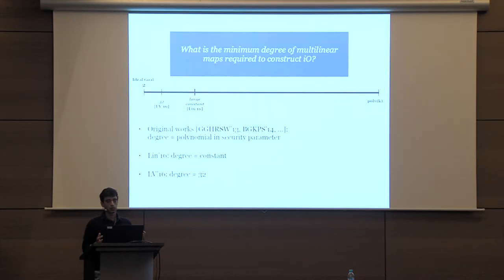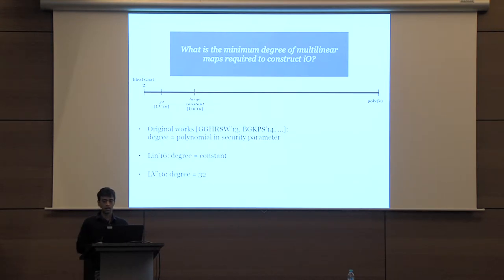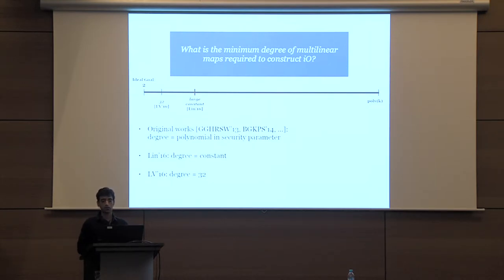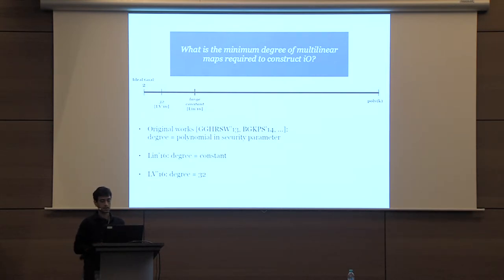The natural question to ask is: what is the minimum degree of multilinear maps required to construct IO? The ideal goal would be two, so we can just base IO on bilinear maps. However, the original constructions starting with Garg et al. built IO from polynomial-degree multilinear maps. In last Eurocrypt, a very nice construction by Lynn showed how to construct IO from constant-degree multilinear maps, but this constant was large.